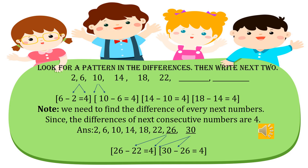First, we find the difference of 6 and 2: 6 minus 2 equals 4. Likewise, the difference of 10 and 6: 10 minus 6 equals 4. Since the differences of consecutive numbers are all 4, we find the next number: 26 minus 22 equals 4, and 30 minus 26 equals 4. So the next number will be 30.